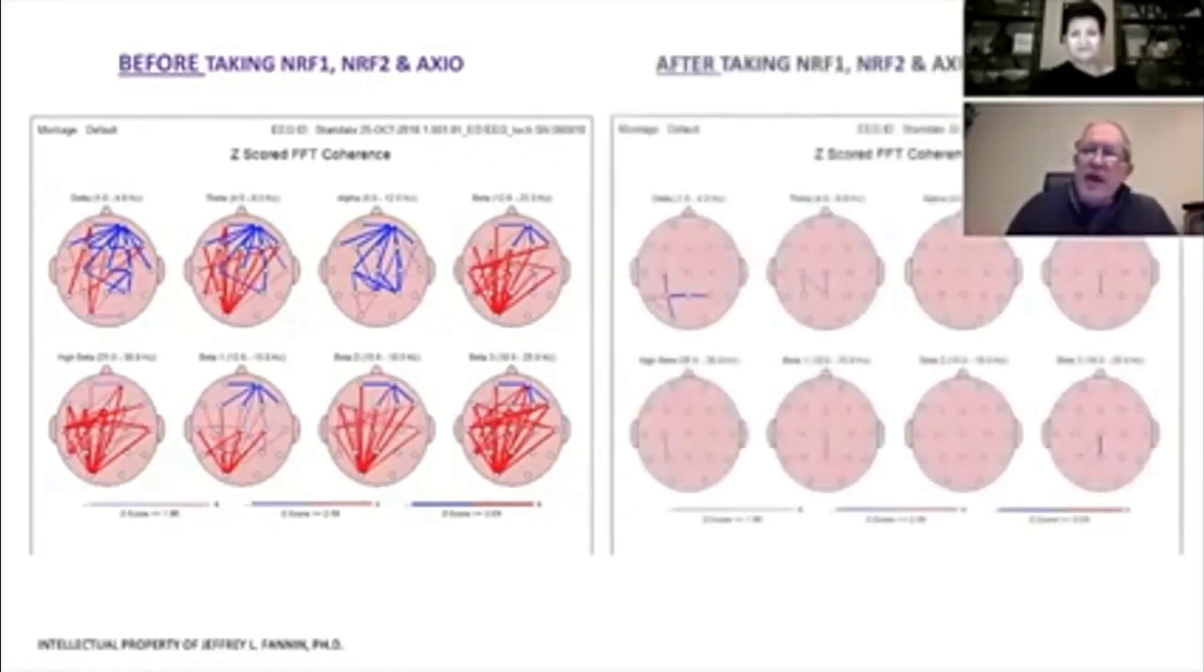After he'd been on the NRF1, NRF2, and Axio for 12 days, we see this. When there are very few lines or no lines at all, it is comparing his demographics—male, female, left, right hand, age—to the normative database, saying that this is in the normal range.